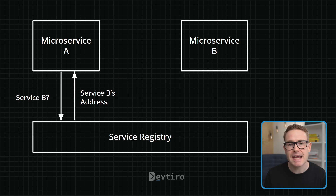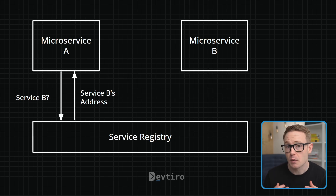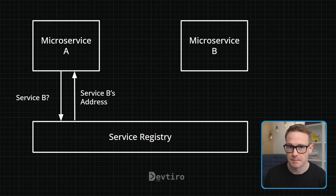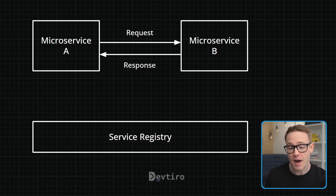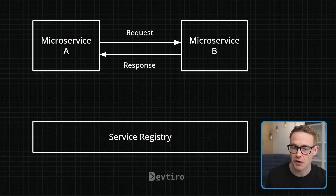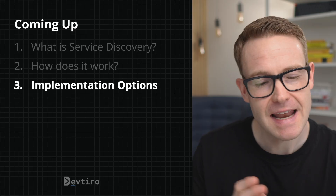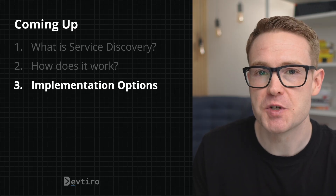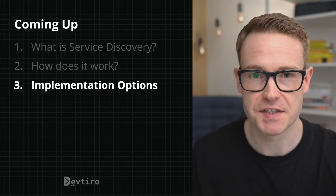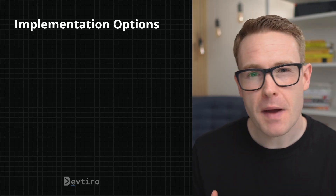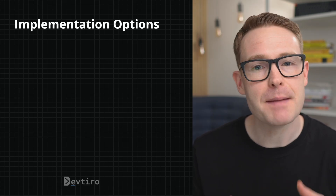That brings us to stage two: lookup. Let's say microservice A needs to make a request to microservice B — what it will do is first look up microservice B's network address in the service registry. It's the network address provided by the service registry that microservice A will use to make a request to microservice B.